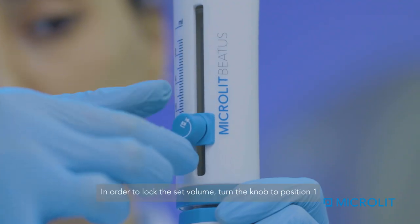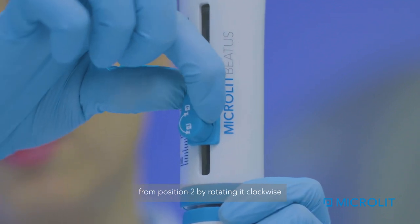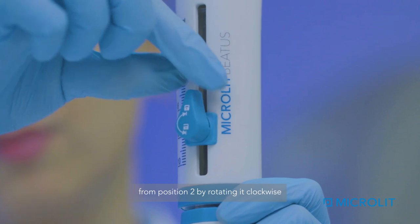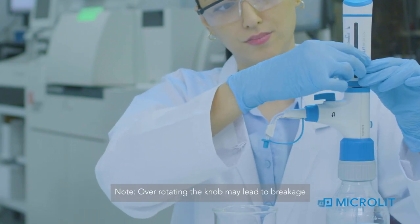In order to lock the set volume, turn the knob to position 1 from position 2 by rotating it clockwise. Over-rotating the knob may lead to breakage.